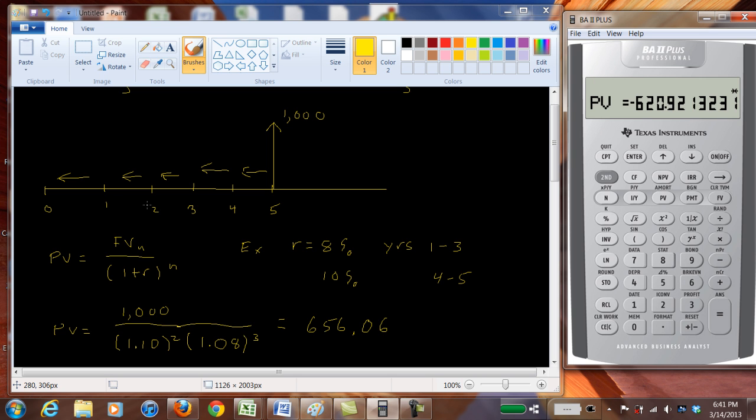Likewise, had we used eight percent for all five periods, we'd have too high a present value. So we put that in, everything else is the same, compute present value, we get 680.58. So we've ignored the ten percent.